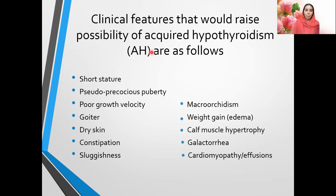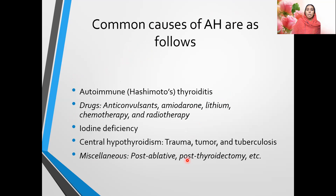Acquired hypothyroidism: clinical features that raise concern include short stature, pseudo-precocious puberty, poor growth velocity, goiter, dry skin, constipation, sluggishness, macro-orchidism, weight gain, calf muscle hypertrophy, galactorrhea, cardiomyopathy, and serous effusions. Common causes include autoimmune Hashimoto's thyroiditis, drugs such as anticonvulsants, amiodarone, lithium, chemotherapy, and radiotherapy, iodine deficiency, central hypothyroidism from trauma, tumor, or tuberculosis, and miscellaneous causes like post-ablation or post-thyroidectomy.